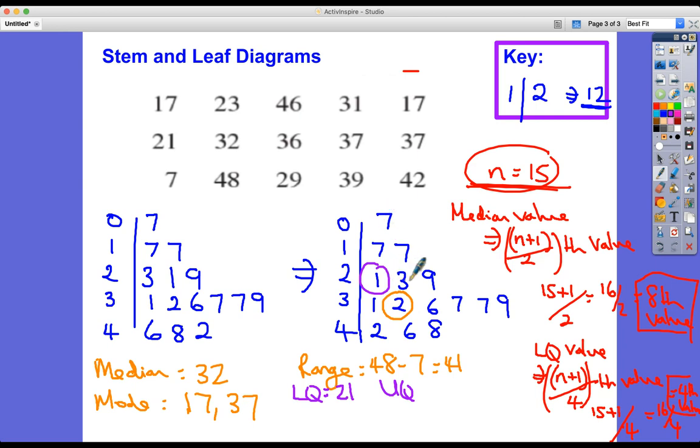The upper quartile - let's notice there's three between each one. If this is 4th, this is 8th, three quarters of the way through the data would be 3 times 4, the 12th value. So 3, 4, 5, 6, 7, 8, 9, 10, 11, 12 - this would be the upper quartile, which is 39. The interquartile range would be 39 subtract 21, which equals 18.